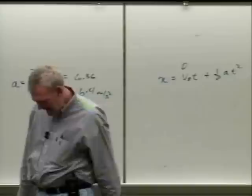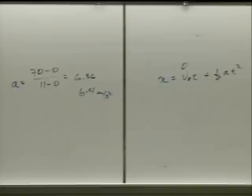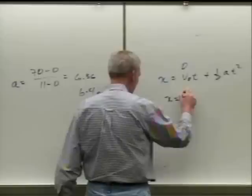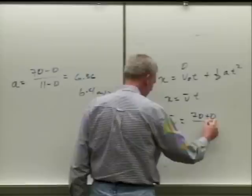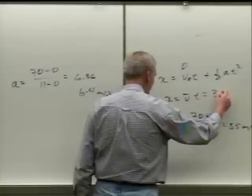So it came out to be 385 meters. Or you could say x equals average velocity times time, and the average velocity was 70 plus 0 divided by 2, which is 35 meters per second — that also gives you 385 meters.